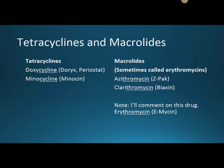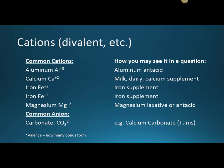Before we get started, I need to do a little chemistry review about cations and what 'divalent' means. The common cations are aluminum, calcium, iron, and magnesium. From chemistry, aluminum is Al+3 — that valence indicates how many bonds form. If someone is on a tetracycline and is given something containing these cations, they'll bind and make the tetracycline ineffective.